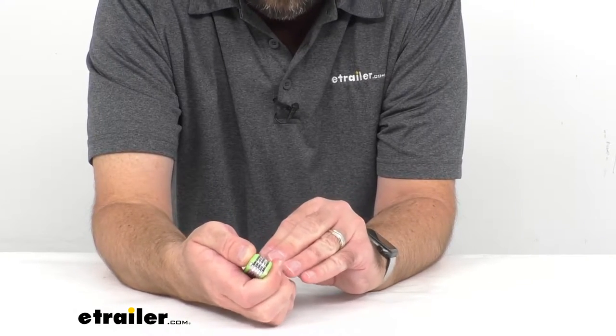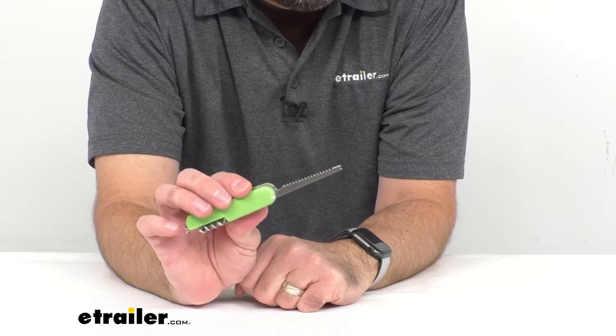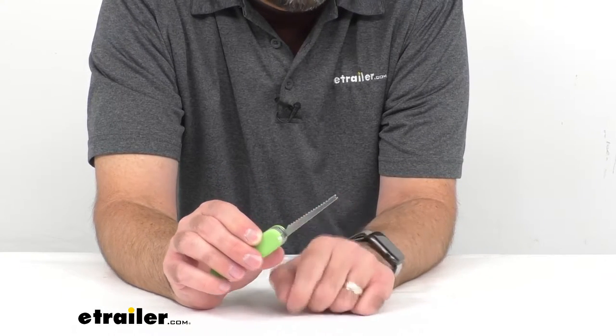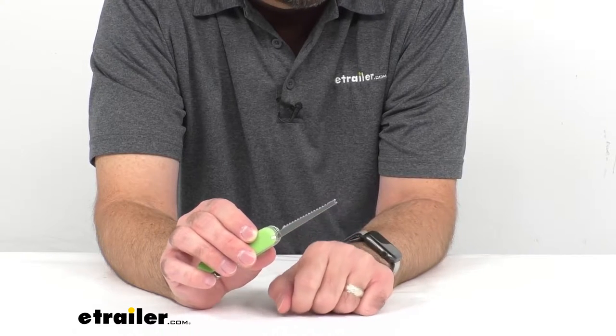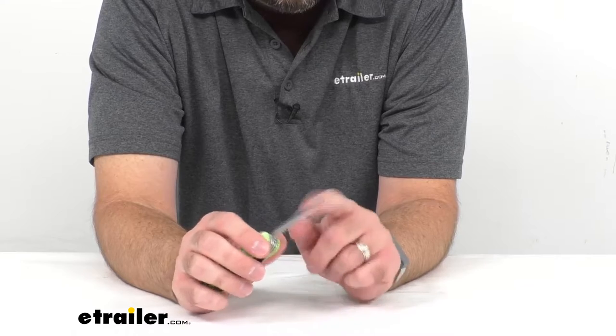Moving down the line here, this knife also has a fish scaler with a disgorger. Of course, you use that disgorger to get hooks out of fish that you have caught, so that's a nice handy feature of this knife.